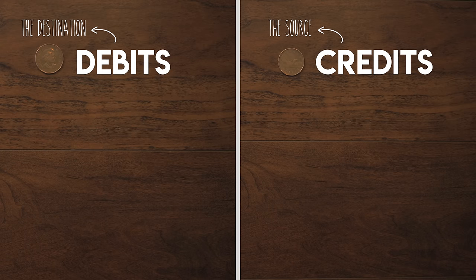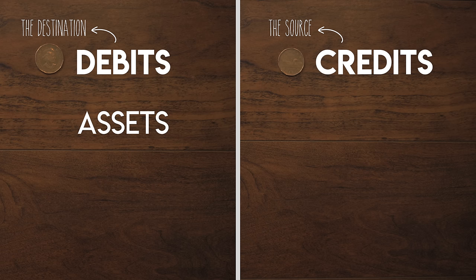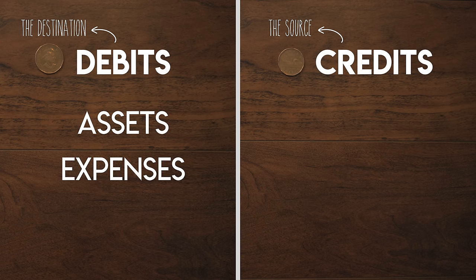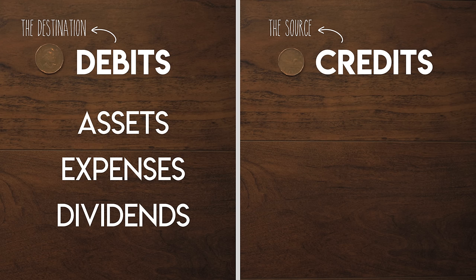Destinations that economic benefit can flow to include assets like cash, buildings, and amounts owed to you by others, but also expenses — where a business pays a third party for a good or service they have provided — and dividends, where a business distributes some of its cash to its owners.